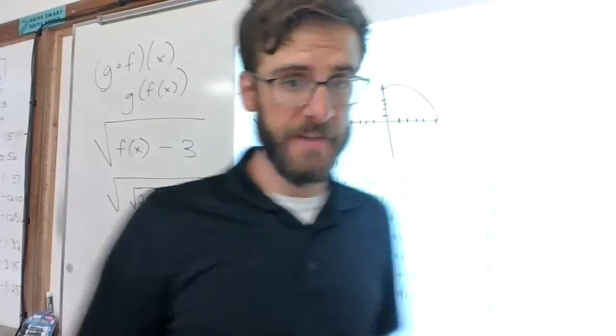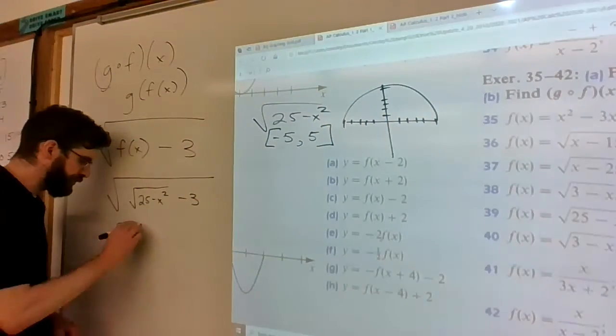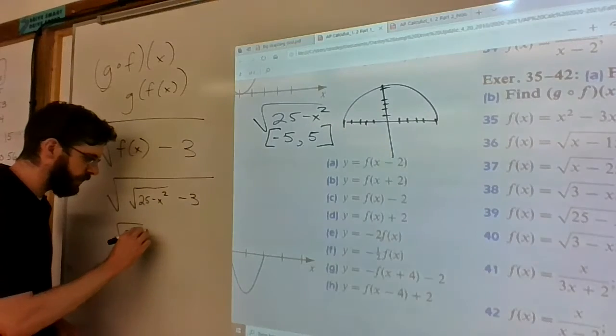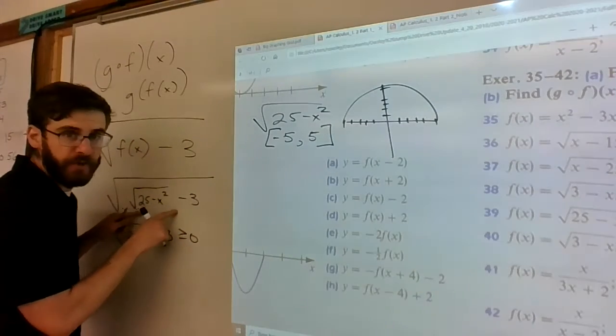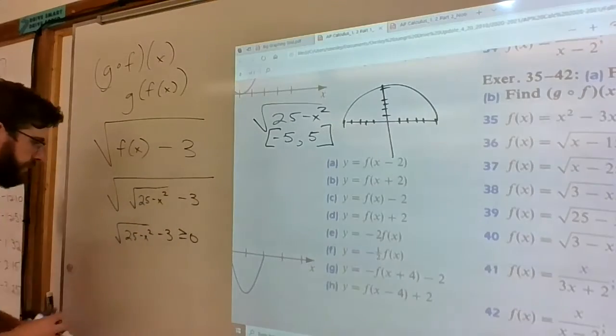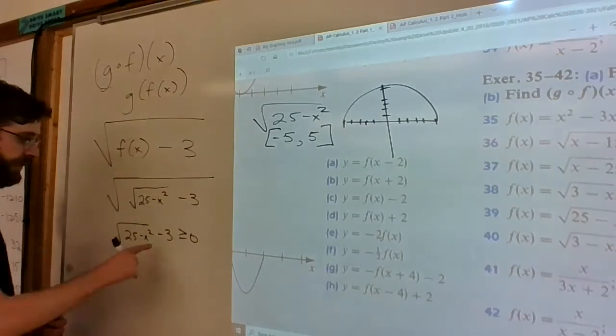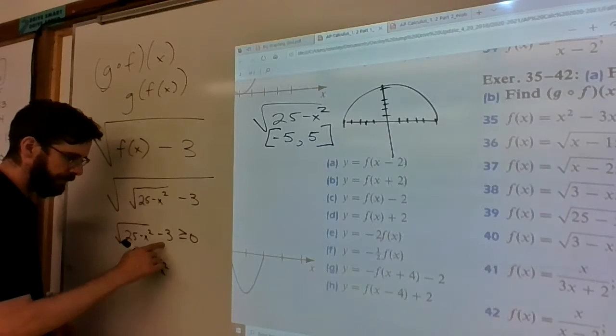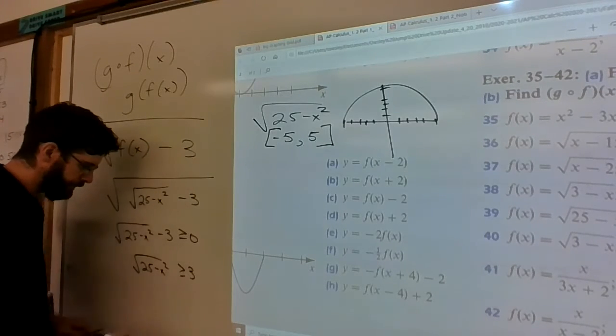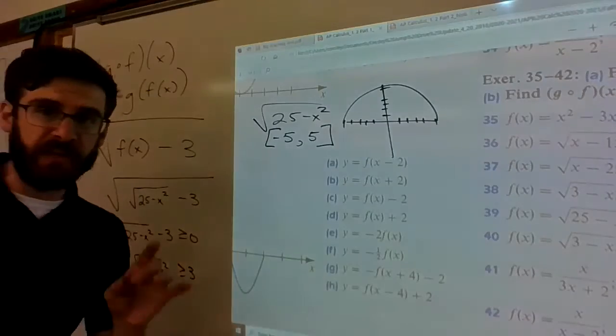Okay, so think about this: √(25 - x²) - 3 must be greater than or equal to 0. Given these conditions, here's an interesting thing. I can move this over by adding.